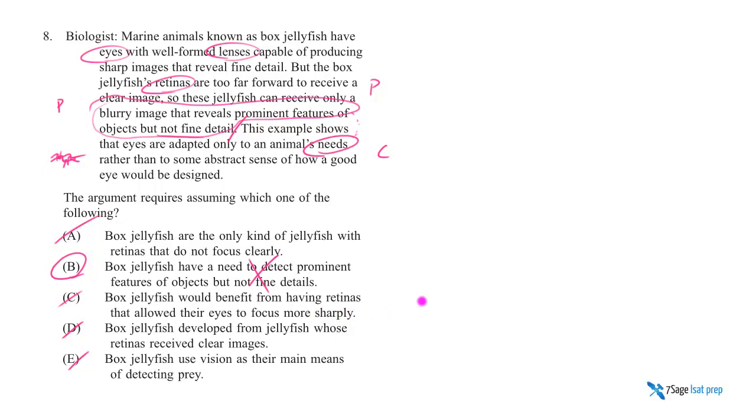Box jellyfish would benefit from having retinas that allow their eyes to focus more sharply and shoot lasers. I mean, yeah, why wouldn't you want eyes that shoot lasers? Box jellyfish developed from jellyfish whose retinas received clear images. What? I don't even know if that's true. Also, it certainly doesn't need to be true. It could have developed from jellyfish whose retinas didn't receive clear images. That would have no bearing whatsoever on our argument.